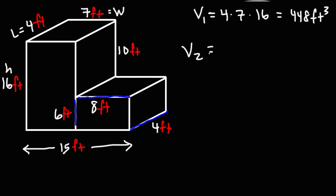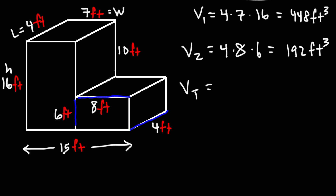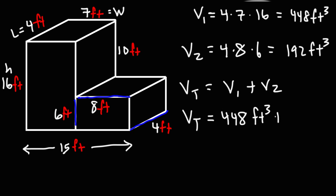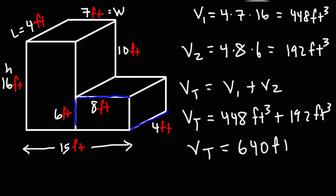So now we can calculate the volume of the second rectangular prism. We have a length of 4, a width of 8, and a height of 6. 4 times 8 is 32, times 6, that's 192. So we have 192 cubic feet. Now to get the total volume of the composite rectangular prism, we're going to add V1 and V2: 448 plus 192, and that gives us a total volume of 640 cubic feet.